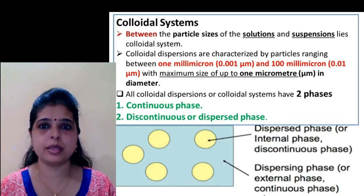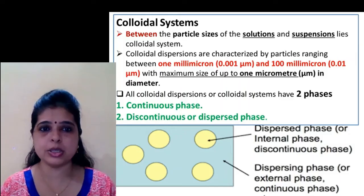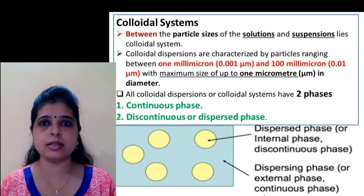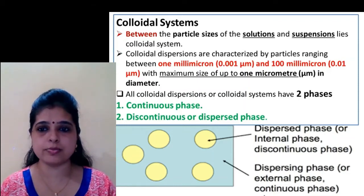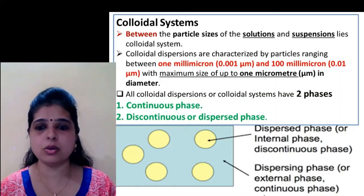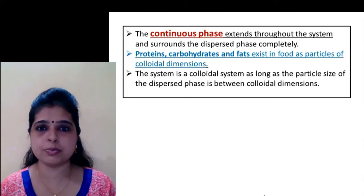Next is the colloidal system. Between the particle sizes of the solution and suspension lies the colloidal system. These are characterized by particles ranging between 1 millimicron and 100 millimicron, and it can go up to 1 micrometer in diameter. This colloidal system has two phases: first is continuous phase and another is discontinuous phase or dispersed phase. Dispersed phase is also called internal phase or discontinuous phase. It is generally present in a smaller quantity, and the phase in which it is dispersed is called the dispersing phase or external phase or continuous phase. This continuous phase extends throughout the system and surrounds the dispersed phase completely.